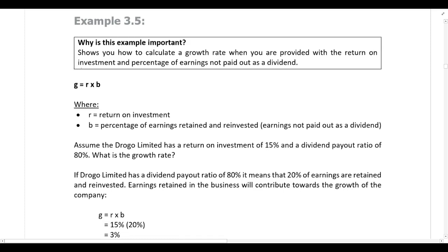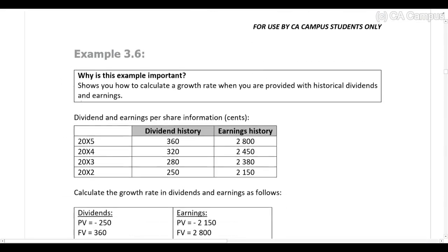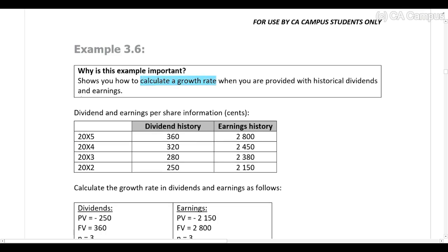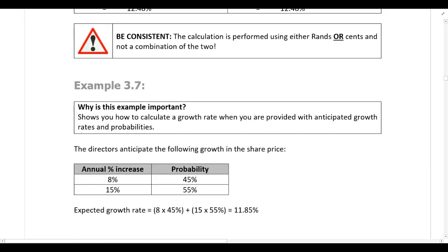In all previous examples the growth rate was given, but if it has not been provided you are required to calculate it. Example 3.5 shows how to calculate the growth rate when given the return on investment and the percentage of earnings not paid out as a dividend. Example 3.6 covers calculating growth from historical dividends and earnings. Example 3.7 deals with calculating a growth rate from anticipated growth rates and probabilities. Work through all those examples and make sure you can calculate the growth rate if it is not provided.